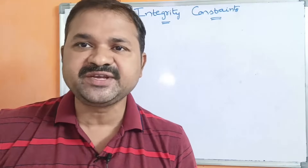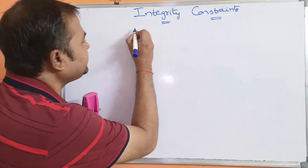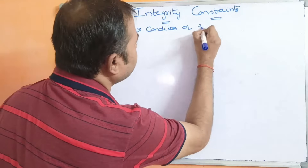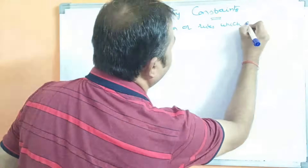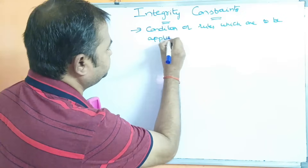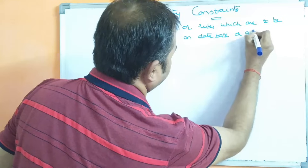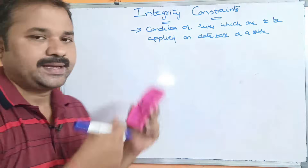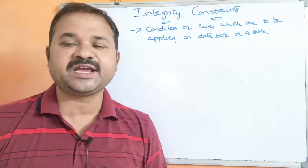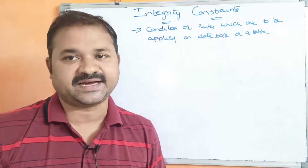In this video, we are going to discuss about integrity constraints. First, let's see what is a constraint. Constraint means a condition or rules which are to be applied on a database or a table — a set of conditions or rules so that the table can accept only valid data, that is correct data.